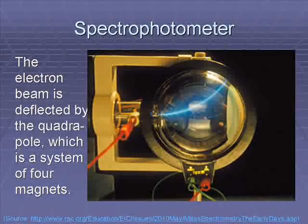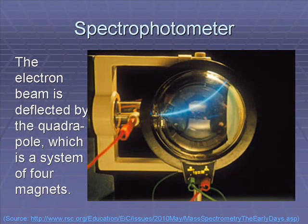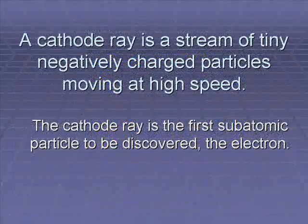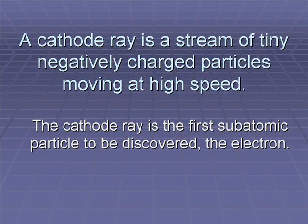Thompson found that a magnet could deflect the beam of light in the tube. When he put the positive end of the magnet to the tube, it attracted this beam. The negative end of a magnet repelled it. From these observations, Thompson found that a cathode ray was a stream of tiny negatively charged particles moving at high speed. Thompson had discovered the first subatomic particle, called the electron.